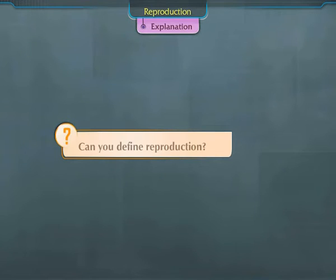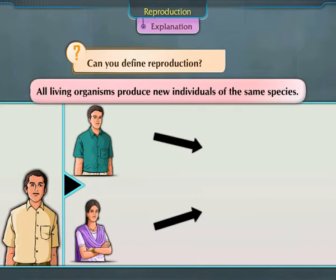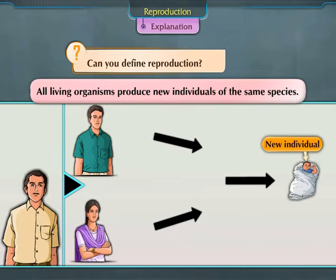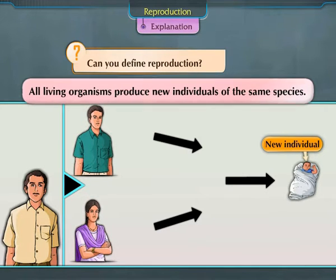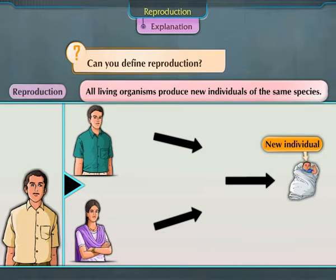All living organisms produce new individuals of the same species. This fundamental characteristic of living organisms is known as reproduction. Let us now understand reproduction with the help of an activity.